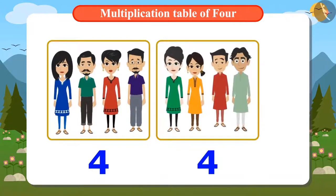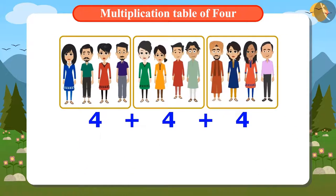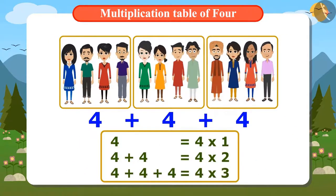To know how many guests will use 2 tables, you have to add 4 two times. For 3 tables, you have to add 4 three times. That means you have to read the multiplication table of 4.